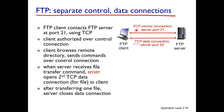This TCP connection at port 21 is called the control connection. So what is the control connection? The client is authorized over the control connection — that means username and password. The client browses the remote directory and sends commands over the control connection.